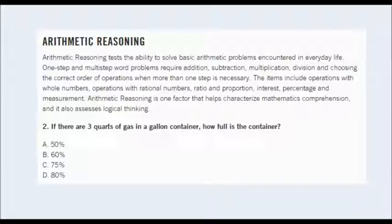And this question is one of the testing areas called Arithmetic Reasoning. Arithmetic reasoning tests the ability to solve arithmetic problems encountered in everyday life. One-step and multi-step word problems require addition, subtraction, multiplication, division, and choosing the correct order of operations when more than one step is necessary. The items include operations with whole numbers, operations with rational numbers, ratio and proportion, interest, percentage, and measurement. Arithmetic reasoning is one factor that helps characterize mathematics comprehension, and it also assesses logical thinking.